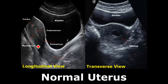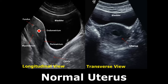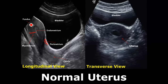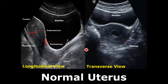In the longitudinal view we see the most detail. The three layers of the uterus are: the endometrium, which is the innermost layer; the myometrium, which is the thick muscular middle layer; and the perimetrium, which is the outermost layer. The top portion of the uterus is called the fundus, and the lower end where it meets the vagina is called the cervix.